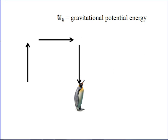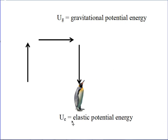We speak of this energy of position — the relative position of penguin and earth — as gravitational potential energy. The symbol for potential energy represents energy of configuration; it has to do with where the penguin is relative to the earth. Another form of potential energy is elastic potential energy, again energy of configuration: where is one end of the spring relative to the other? You hopefully recall the formulas for these.